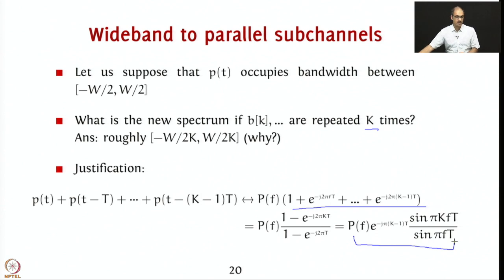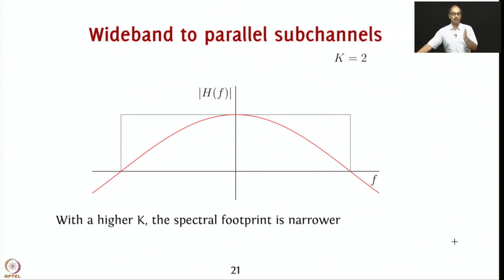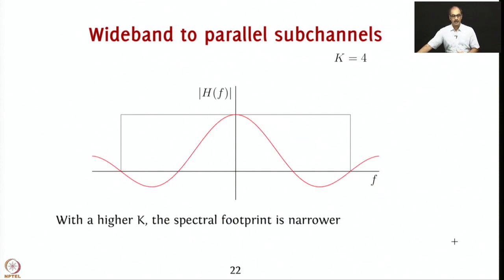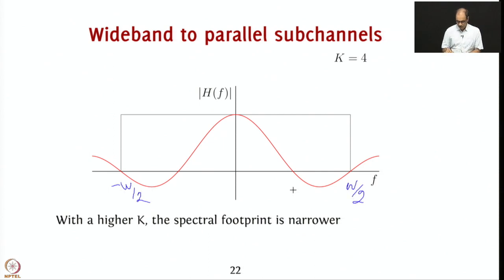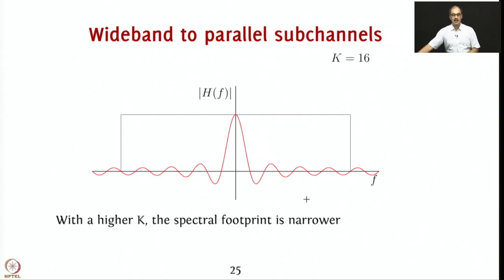Problem still: data rate is 1/K. We did this for K=4; if K=2 you get this kind of spectral footprint from repeating b_0 twice, b_1 twice and so on. If you repeat 4 times, you get a narrower result — if this is -W/2 to W/2, then the bandwidth becomes W/4, which is 1/(4T). As you increase K, you get narrower and narrower pulses that start looking a lot like sincs.